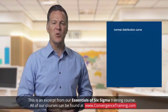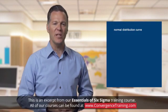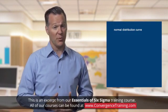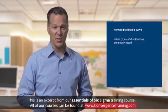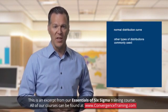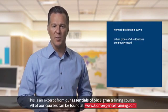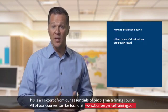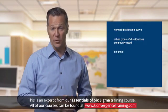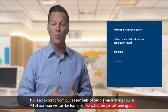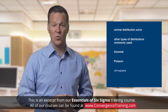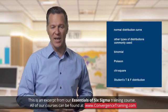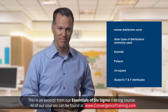A normal distribution curve is heavily used in Six Sigma, but there are other types of distributions that are also commonly used. These include binomial, Poisson, Chi-square, and Student's t and f distributions.